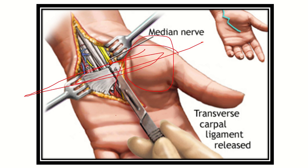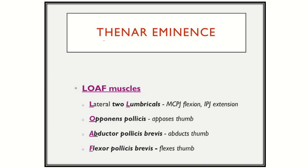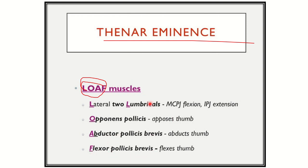The median nerve supplies only four muscles in the hand, remembered by the mnemonic LOAF: L for Lateral two lumbricals, O for Opponens pollicis, A for Abductor pollicis brevis, and F for Flexor pollicis brevis. These four muscles are supplied by the median nerve distal to the flexor retinaculum.